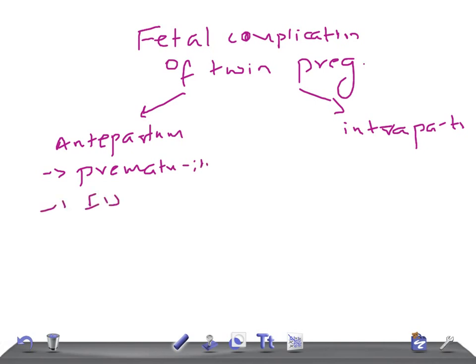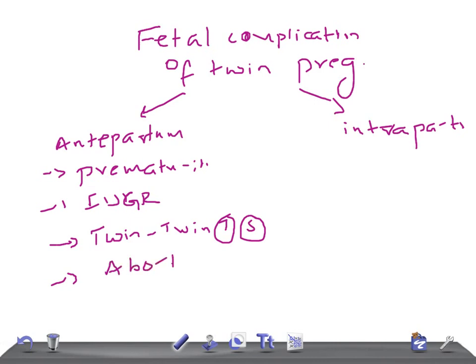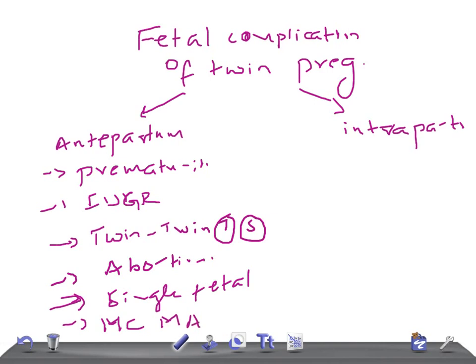During the antepartum period, the baby can have prematurity, intrauterine growth restriction, twin-to-twin transfusion syndrome, vanishing twin, abortion, single fetal demise, mono-chorionic mono-amniotic twins, and congenital anomalies such as acardiac fetus and conjoined twins.